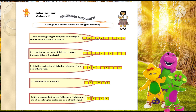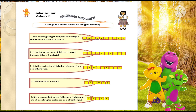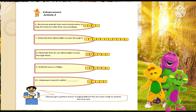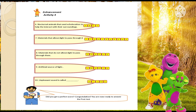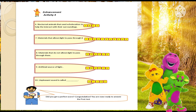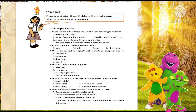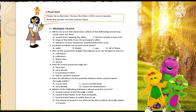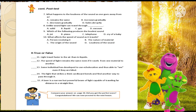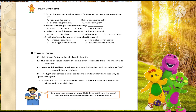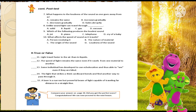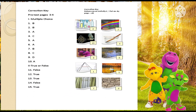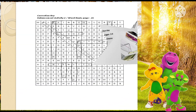Enhancement activity four: Guess what? Arrange the letters based on the given meaning. Did you get the perfect score? Congratulations! You are now ready to answer the post test. Please do as directed. Choose the letter of the correct answer and write the answer on your answer sheet. Compare your answers on page 30.